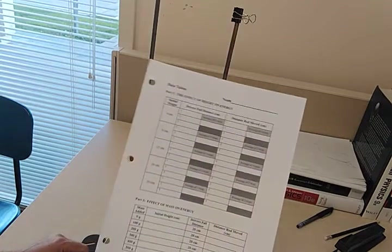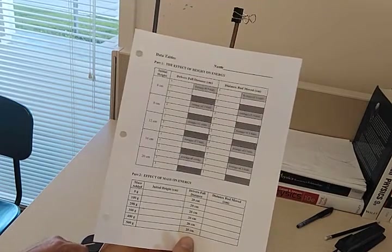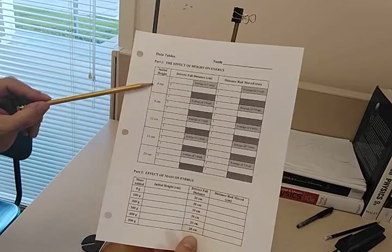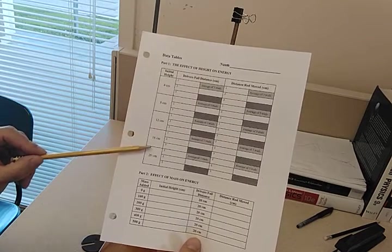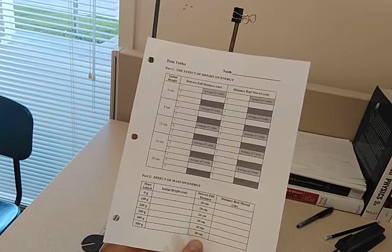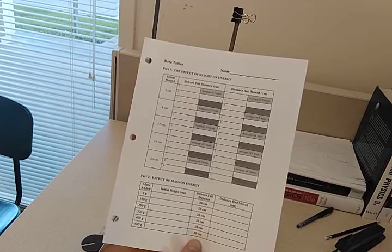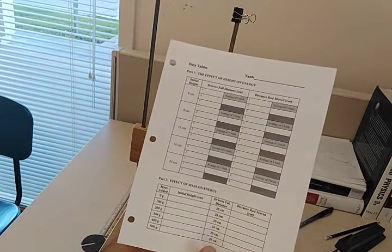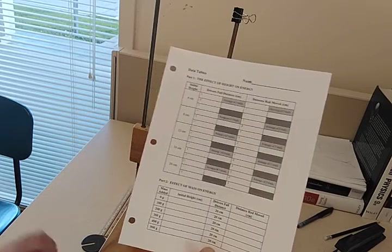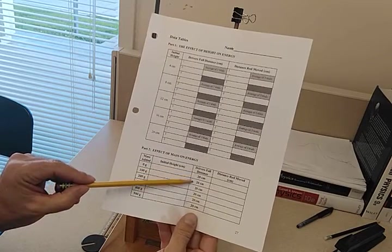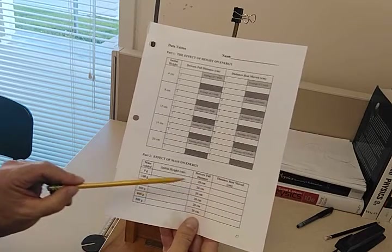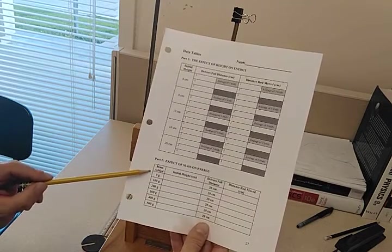And so in our first experiment, this is our data table on page 27, and in our first experiment, we're going to be varying the initial height, the height that we release the pile driver from, and we're going to be measuring the distance the rod moves. In the second part of the experiment, we're going to keep the distance that the driver falls constant the whole way through, and we're going to be varying how much mass is added.